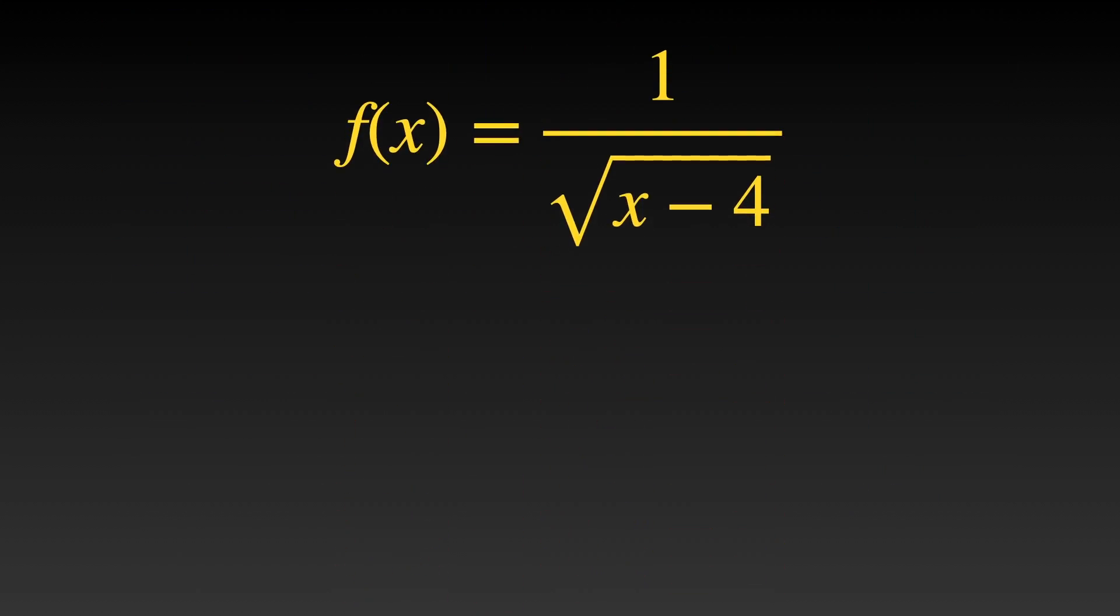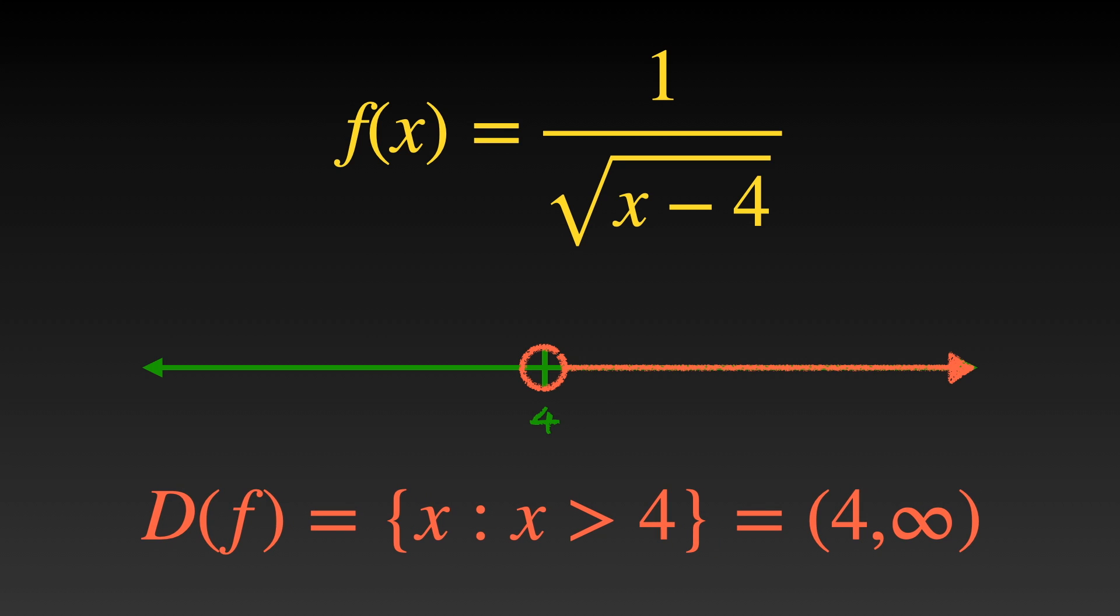For example, f(x) is the square root of x minus 4. I want to show you what the domain of this function is. Square root must be greater than or equal to 0, but we can include 0. So the function requires x minus 4 greater than or equal to 0. We can see domain f is the set of x where x is greater than or equal to 4, or the interval 4 to infinity.